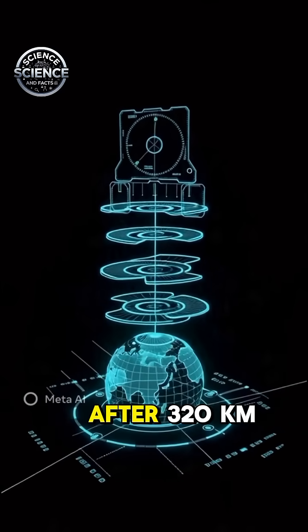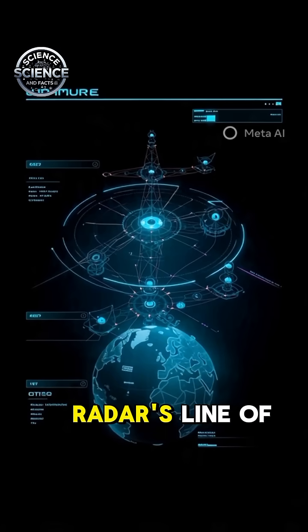But because Earth is round, after 320 kilometers, the plane goes out of the radar's line of sight.